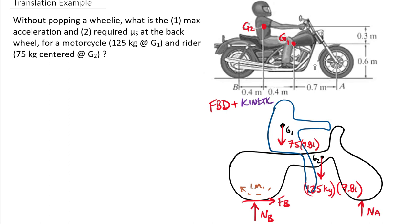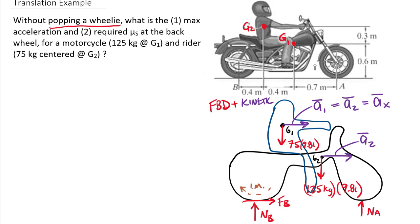Adding the kinetic terms: the motorcycle has acceleration ā₁ and the rider has acceleration ā₂. Since the rider stays in the same relative position on the motorcycle, ā₁ equals ā₂, so we're dealing with one single acceleration term a_x in the horizontal direction. The key condition in this problem is 'without popping a wheelie' — the normal force on the front wheel N_A goes to zero as the motorcycle almost pops a wheelie. The motorcycle is not rotating, just accelerating so quickly that the front wheel is about to lift off the ground. We'll use a standard x-y coordinate system.